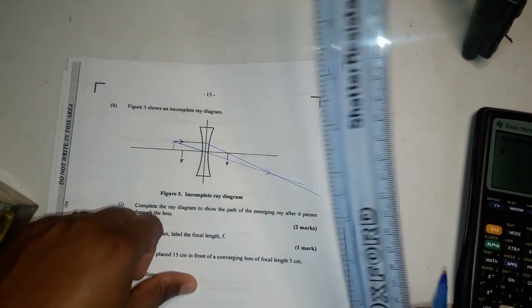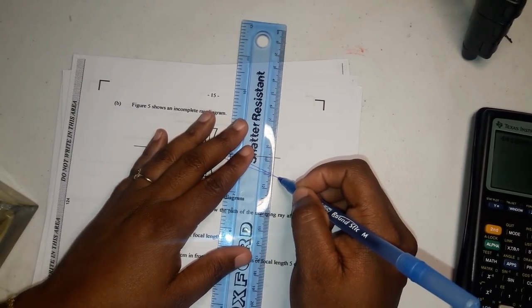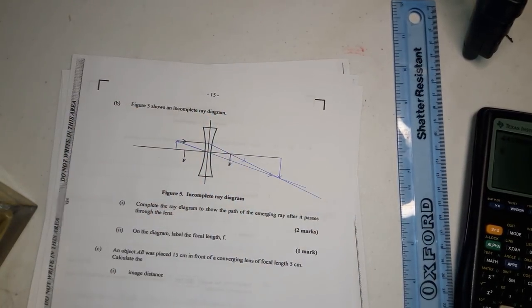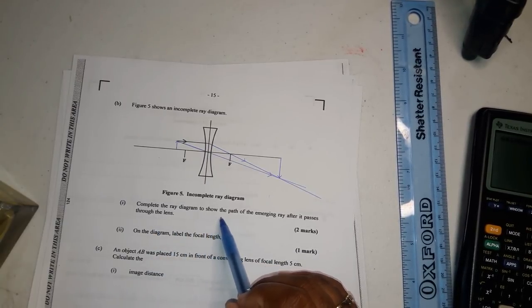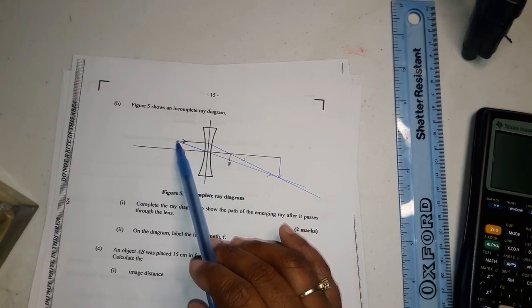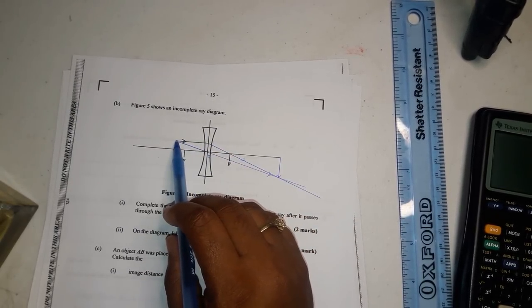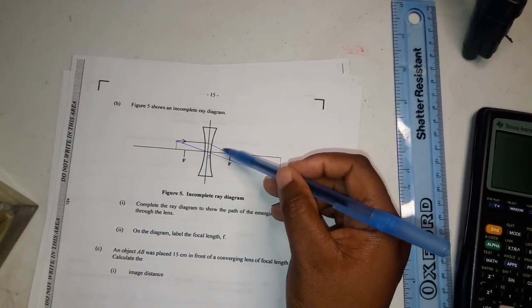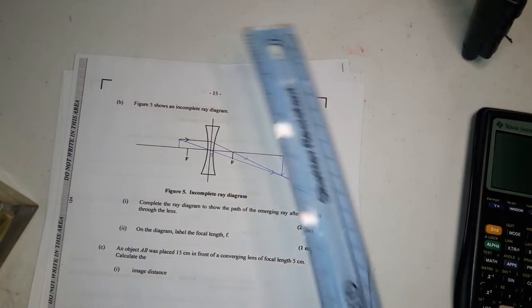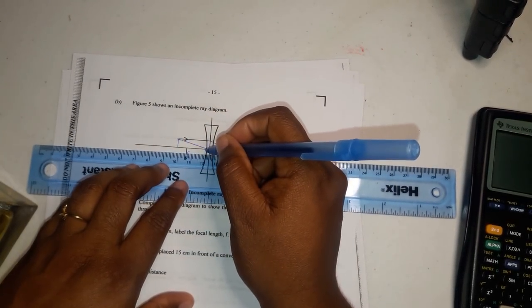So those are the two marks you will get. Draw the image with the rays that join, which is somewhere here. Images upside down, inverted. Complete the ray diagram to show the path of the emerging ray after it passes through the lens. So you have the line that passes directly through the optical center which is here and then the top ray would pass along straight then it will reflect passing directly through the center of the focal length. So it says complete on the diagram label the focal length. The focal length is distance between the optical center and focal plane.